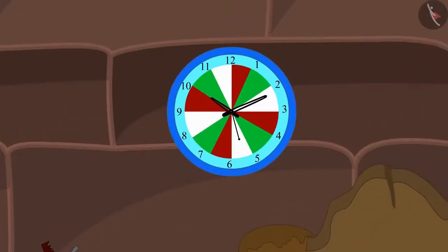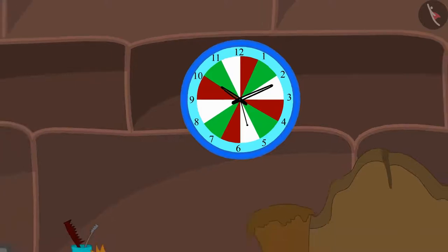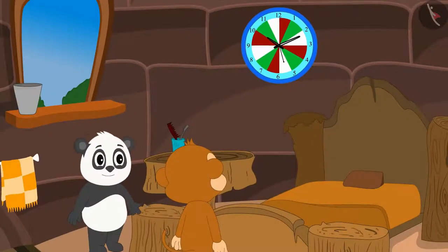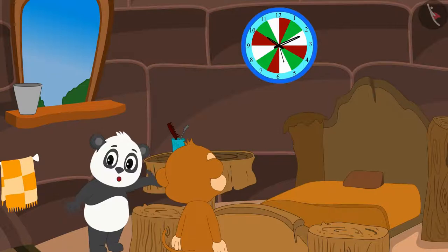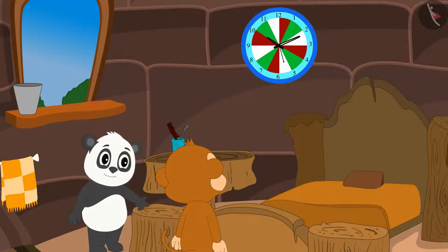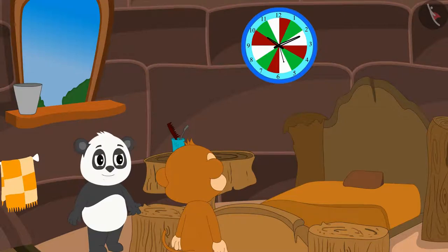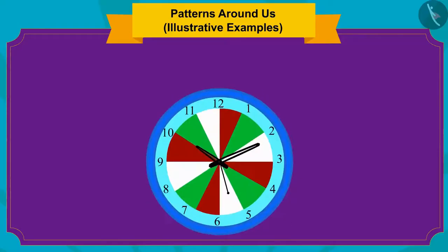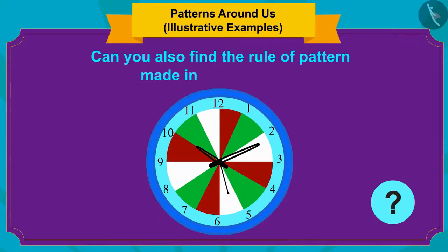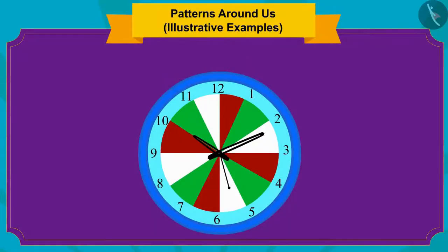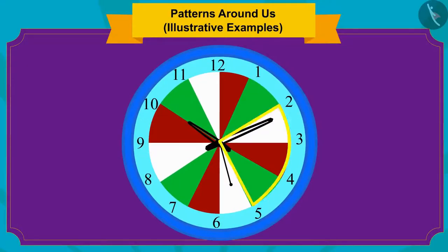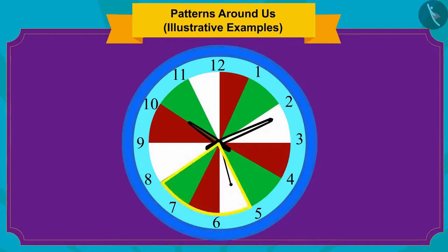Golu looked at the clock hanging on his wall and immediately pointed at it to Babban and said, 'Look, Babban, this is a kind of pattern in my watch as well. Can you understand what the pattern rule is?' Children, can you also find the rule of the pattern made in Golu's clock? Here, a group of white, red, and green strips are repeated in order to form a pattern.